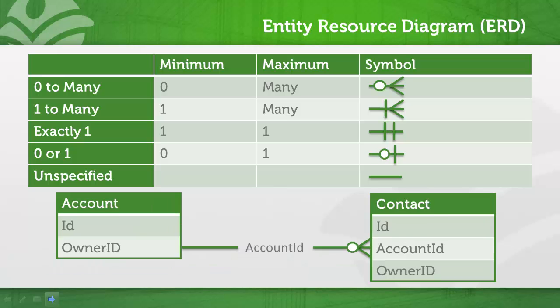Now, in the case where only one side of the relationship is defined, you can draw two conclusions. One, an account can have zero to many contacts. And two, the field account ID on the contact establishes the relationship between objects.